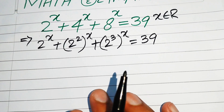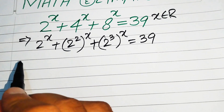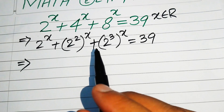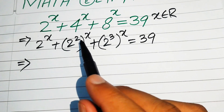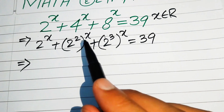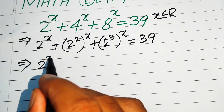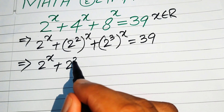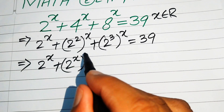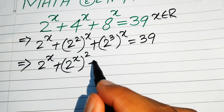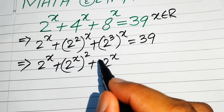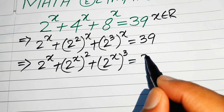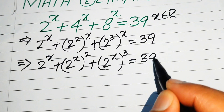In the next step we use the exponential law. According to this law we interchange the two exponents, so it will be written as 2 to the power of x, plus 2 to the power of x whole squared, plus 2 to the power of x whole cubed, equals 39.